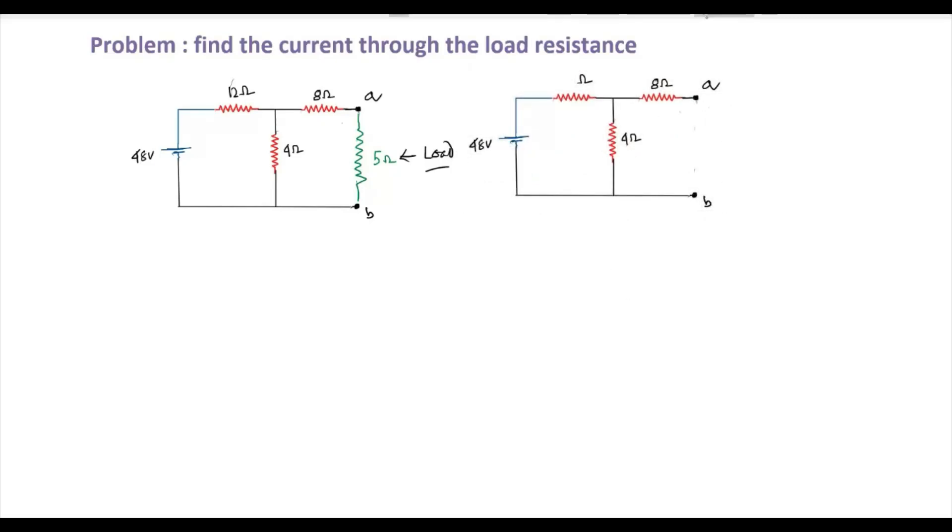We need to find RTH and VTH to replace the circuit. The terminals A and B have a 5 ohm load resistance. So we need to find VTH and RTH.